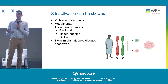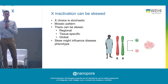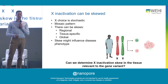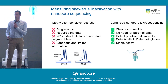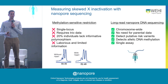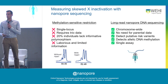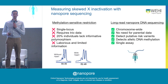If the X that's preferentially active carries a disease-causing mutation, then you can assume it will impact the phenotype of the patient. So the question is: can we determine skewed inactivation? By looking at DNA methylation in long reads, we can — without any parental data, we can detect skewed inactivation and at the same time detect putative risk variants.